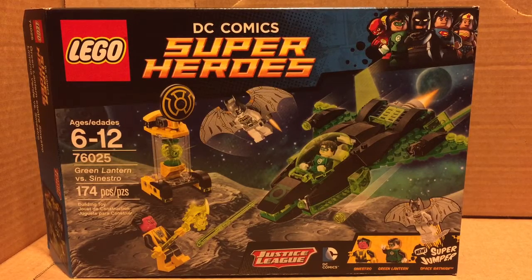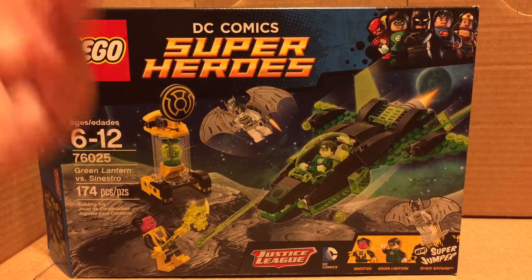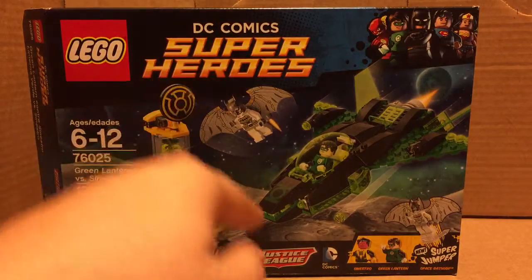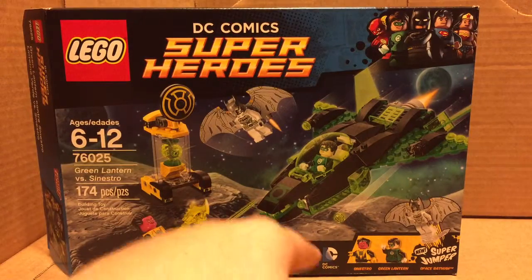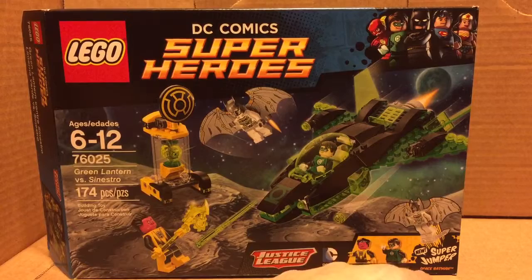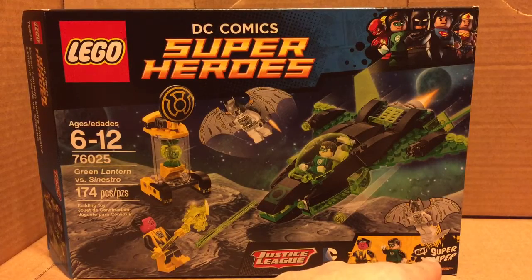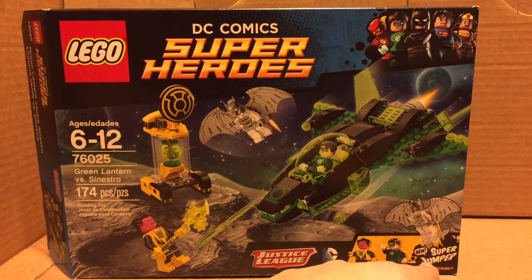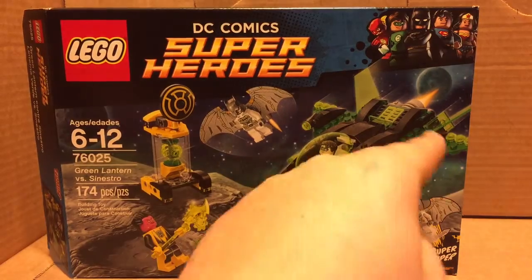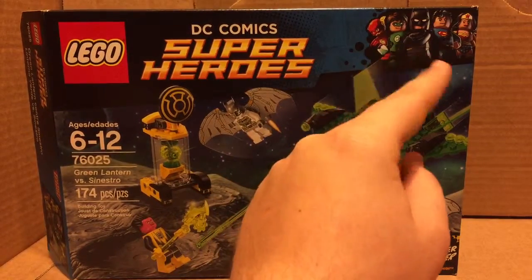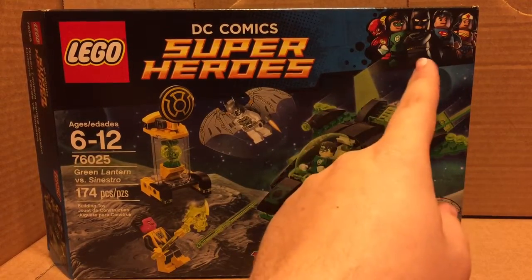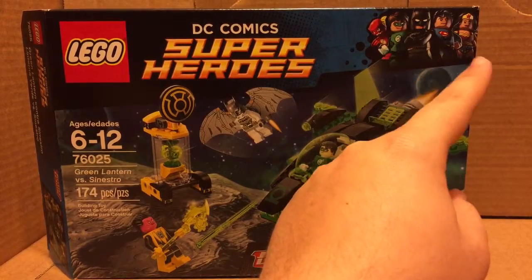On the front of the package, you see that it's LEGO DC Comics Superheroes, Justice League. The three characters you get are Sinestro, Green Lantern, and Space Batman. It talks about the new Super Jumper. Up here you get your little DC Superheroes image of Batman, Green Lantern, Flash, Superman, and Wonder Woman.